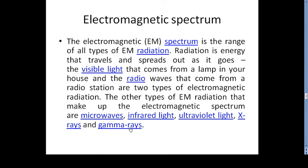We will now discuss the electromagnetic spectrum, which plays an important role in radio communication, satellite communication, and optical communication. The electromagnetic spectrum is a range of all types of electromagnetic radiation. Radiation is energy that travels and spreads out, such as visible light that comes from lamps in your house, and the radio waves that come from a radio station. There are various types of electromagnetic radiation that make up the electromagnetic spectrum.